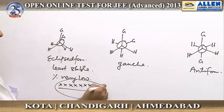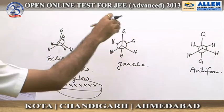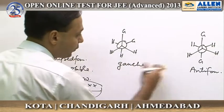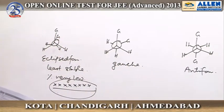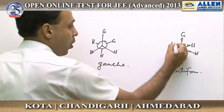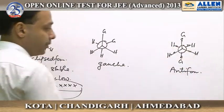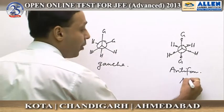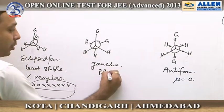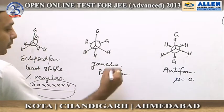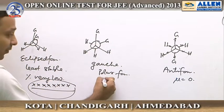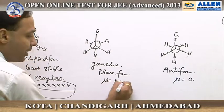It does not contribute to this molecule. If we consider gauche form and anti-form: in anti-form, all same groups are on opposite sides, so the net dipole moment of anti-form is 0. Whereas in gauche form, it is polar because it has some definite dipole moment — some mu will be there.